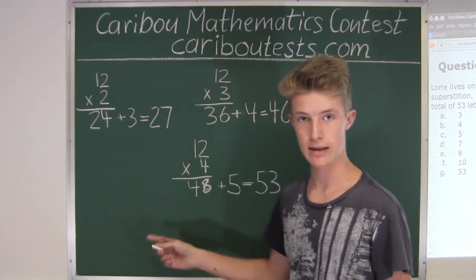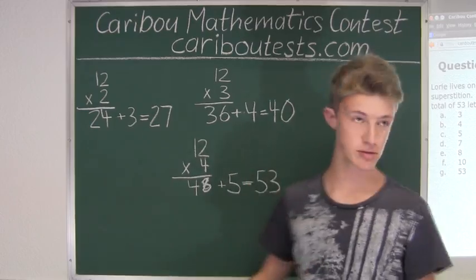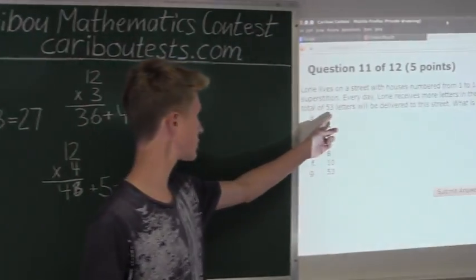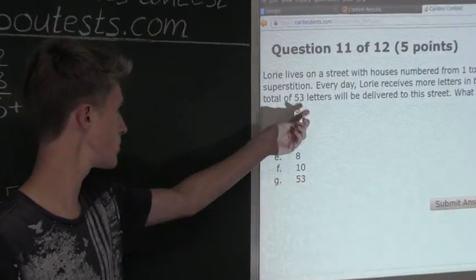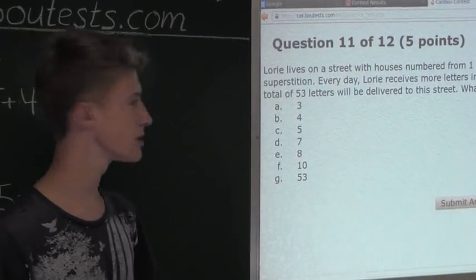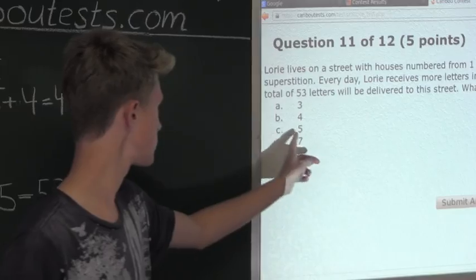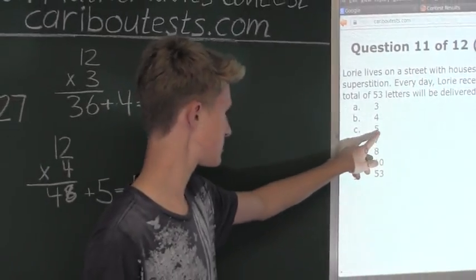That means that in this case, 53 letters would have been delivered to the street. As we can see in the question, 53 letters is exactly what we want. Therefore, we know that the least number of letters that Lori can receive is C, 5.